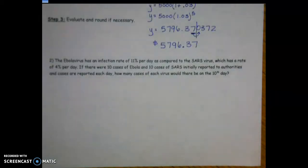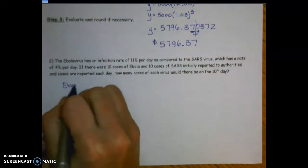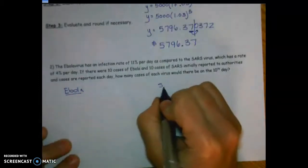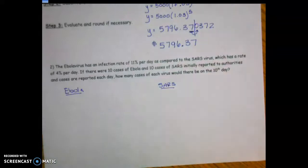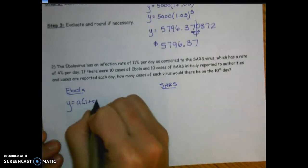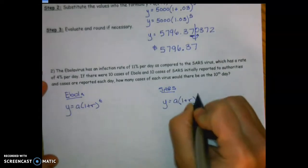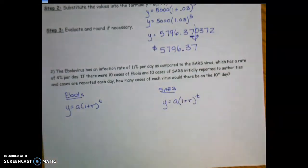Next example: The Ebola virus has an infection rate of 11% per day, compared to the SARS virus at 4% per day. If there were 10 cases of each initially reported and cases are reported every day, how many cases of each would there be on the 10th day? I'll set up the formula for Ebola and SARS side by side: y = a(1 + r)^t for each.